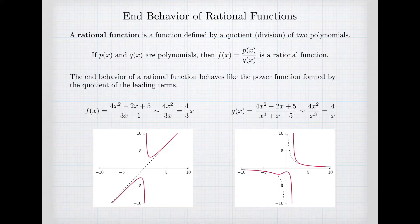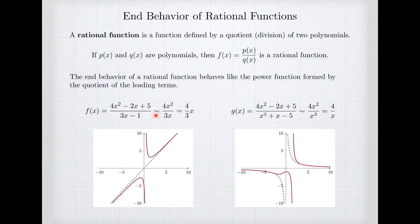Here are two examples of rational functions. For the function f of x on the left, notice it's a quadratic — power 2. The leading term is 4x squared, and the denominator is a linear function, a degree 1 polynomial with leading term 3x. If I create the ratio of the leading terms — 4x squared over 3x — that simplifies to 4/3 times x. So f of x is asymptotically similar to 4/3 x.